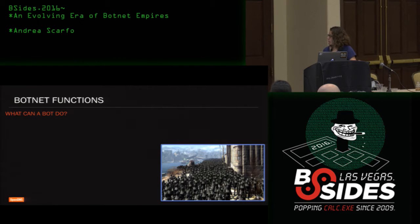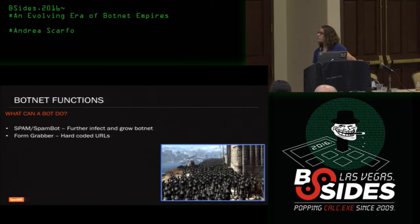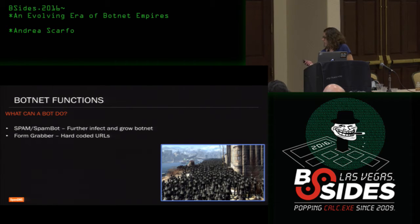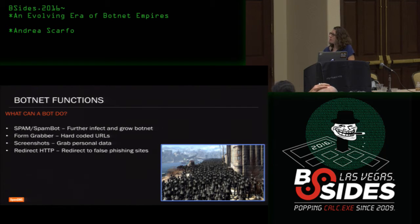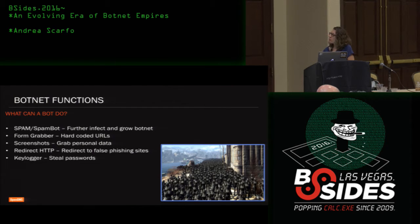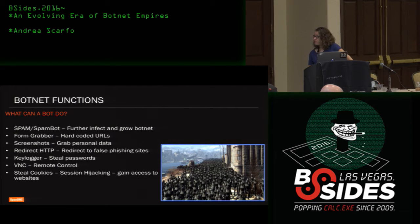Botnet functions — what can a bot do? It can act as a spam bot to further infect more computers. It can act as a form grabber, where hard-coded URLs in the config are monitored for traffic and whatever is entered into forms on those sites is grabbed. It can take screenshots to grab personal data, redirect HTTP traffic to fake phishing sites to steal credentials, deploy keyloggers to steal passwords, provide VNC modules for an attacker to remotely control your PC, and steal cookies to participate in session hijacking.